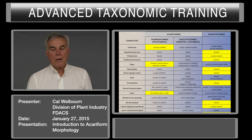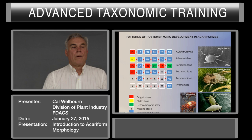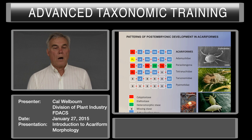The basic Acariformes life cycle is: pre-larva, larva, protonymph, deutonymph, tritonymph, and adult. We're dealing with a biological system with a large number of species, so there's going to be variation.